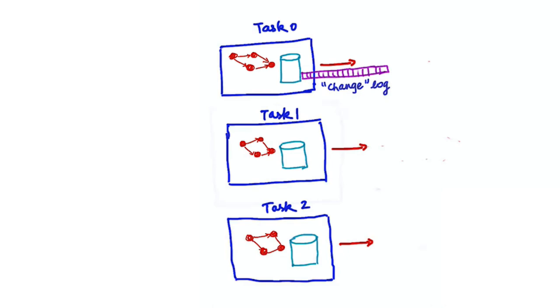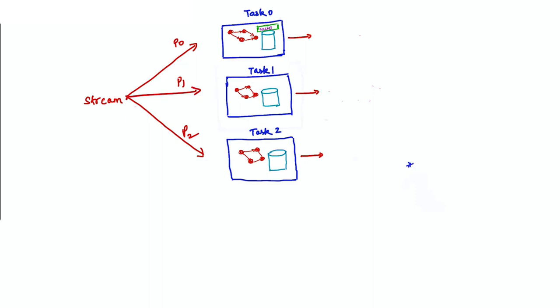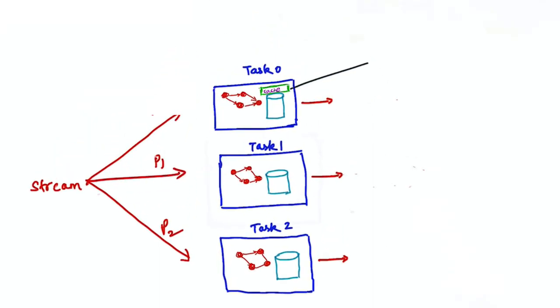During failures, this allows you to later recover the data in the store by reading the contents of the change log from the beginning. A log-compacted Kafka topic is typically used as a change log because Kafka automatically retains the most recent value for each key. Each store also includes an in-memory cache in front of it for better performance.